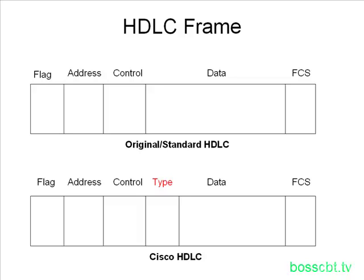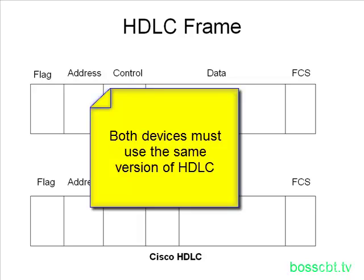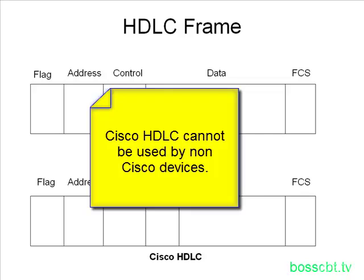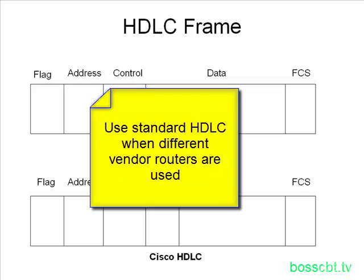A few things to note: the address field isn't really mandatory or helpful on a point-to-point link — if you're talking to someone directly, you don't need to address them every time, so it's a bit redundant. It's also important that whichever version of HDLC you use, both ends must use the exact same encapsulation. Cisco HDLC can only be used with other Cisco devices. If one router is not a Cisco router, use the standard HDLC. If you have two Cisco routers, you can use the Cisco proprietary version.